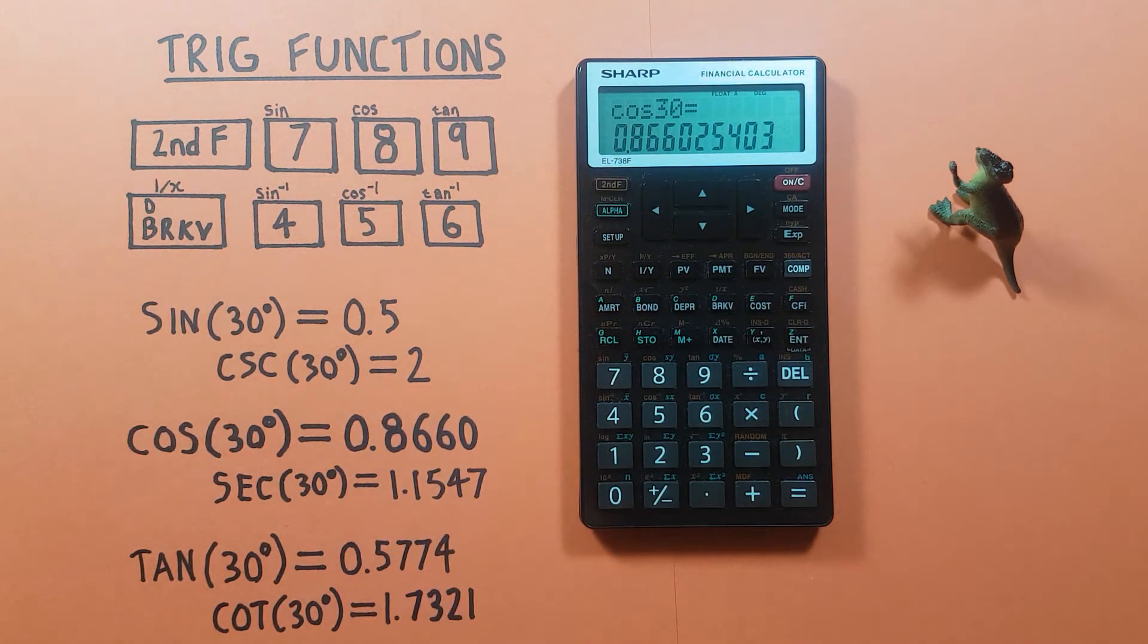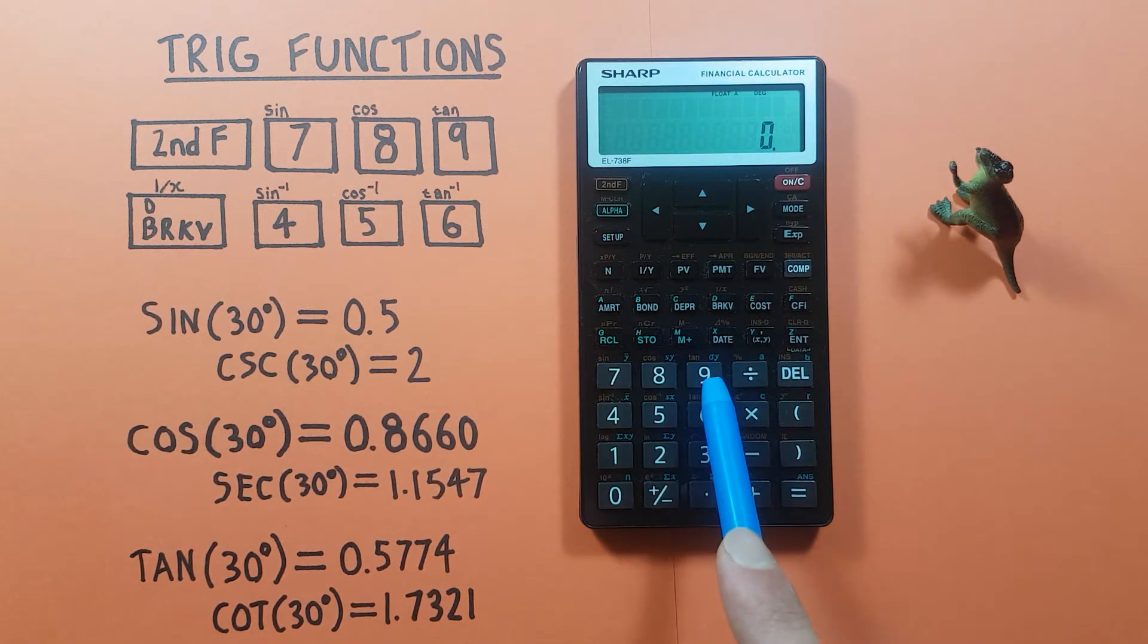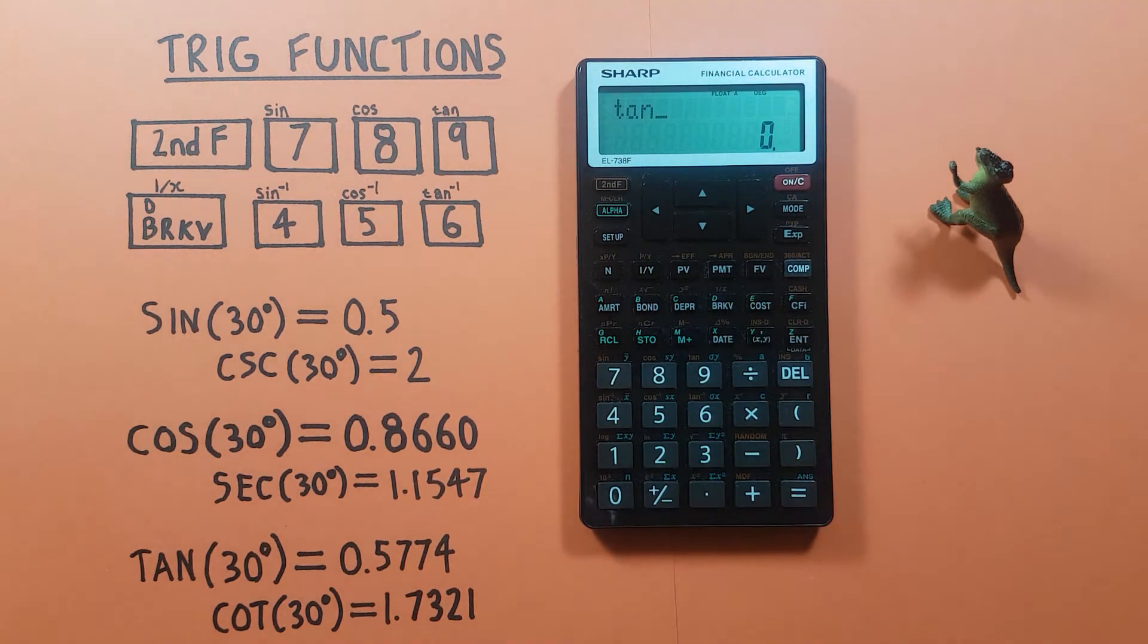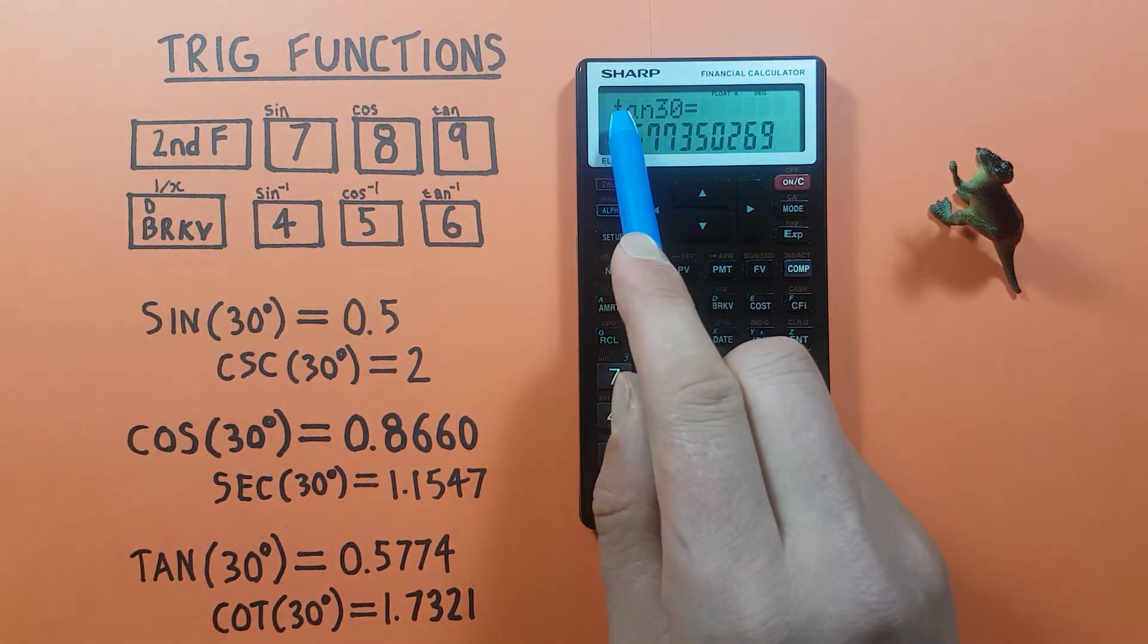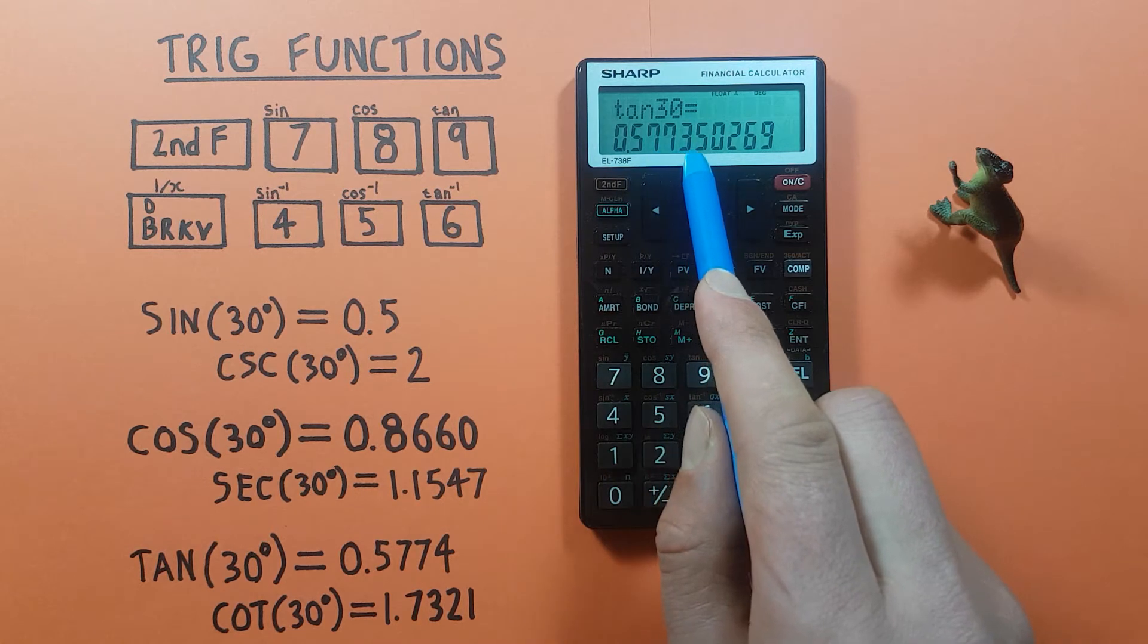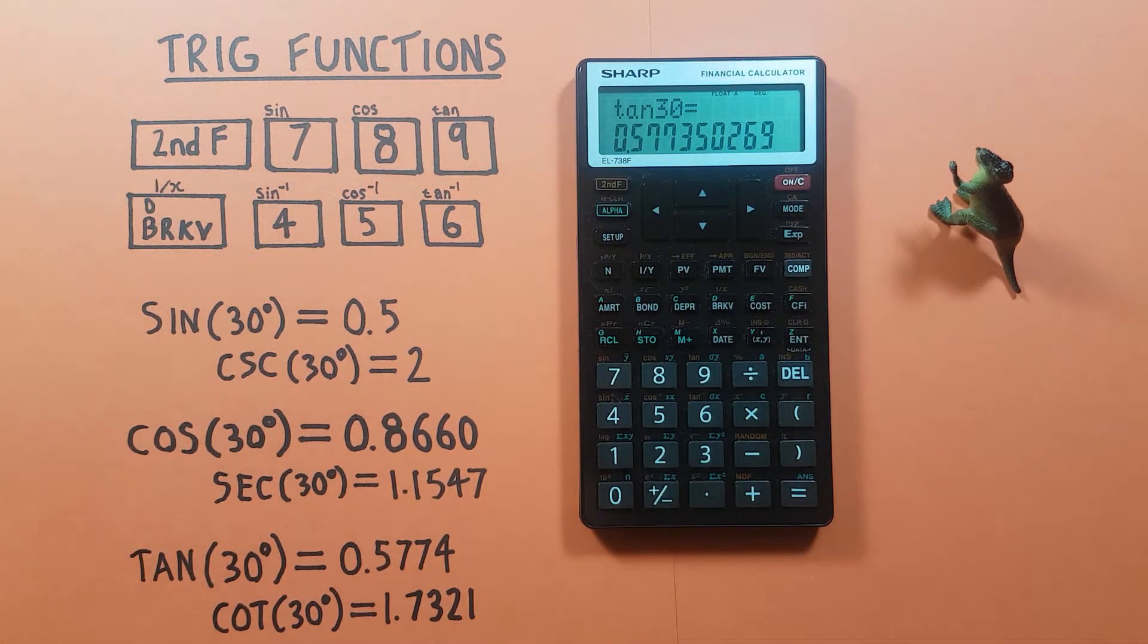And for tan we use the 9 key. So for tan of 30, again second, tan, and then the 30 and press equals, and we see tan of 30 degrees gives us 0.5774, etc. Easy enough.